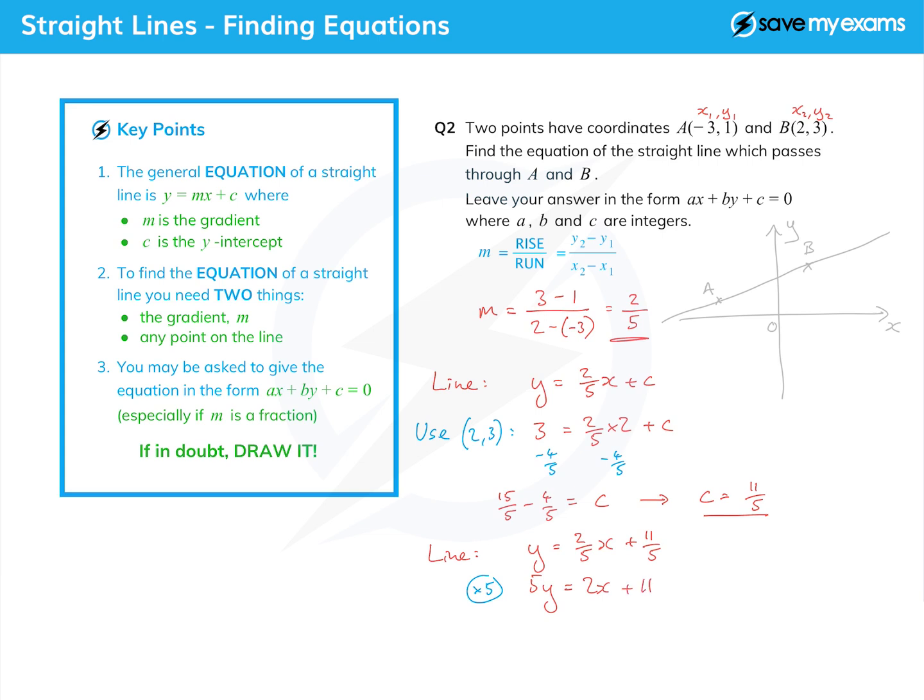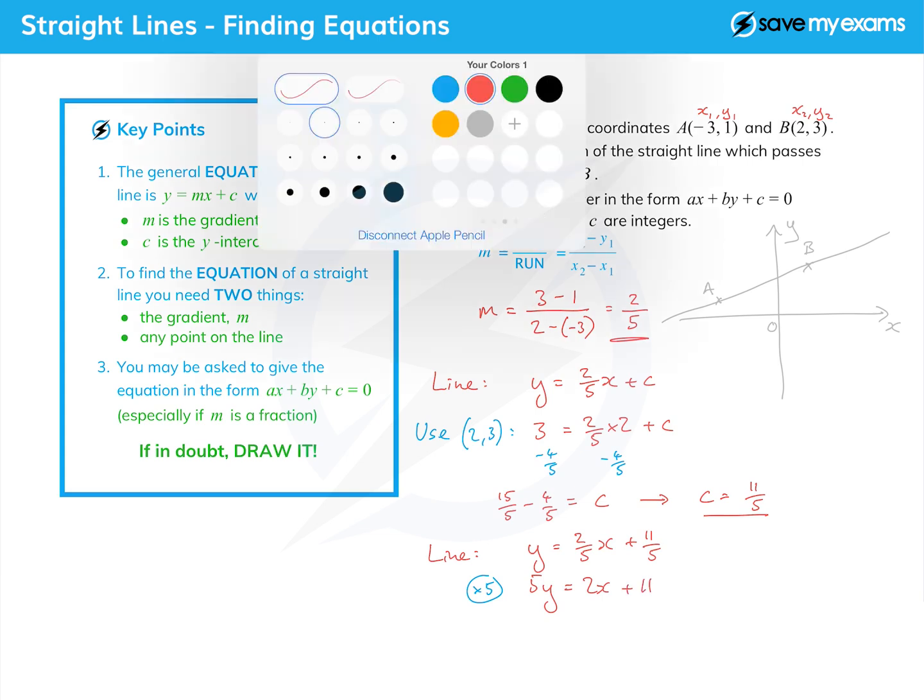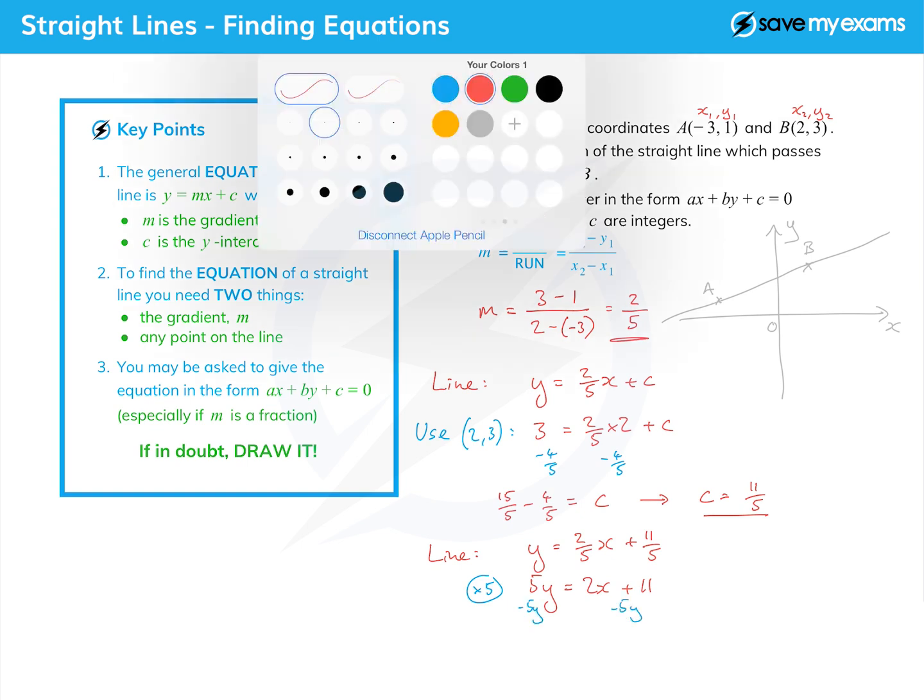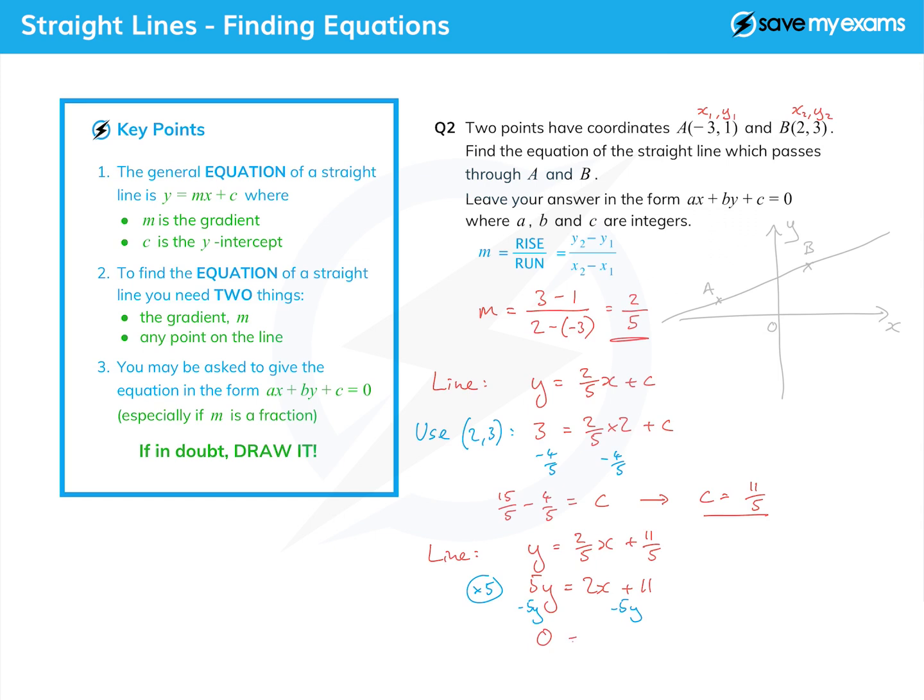Then we just need to do one more thing, which is put it all on one side. So I'm going to subtract 5y from both sides and get 0 equals 2x minus 5y plus 11. It doesn't matter that the zero's on the other side. If you want to cross it out and put it over on the right, that would be fine.